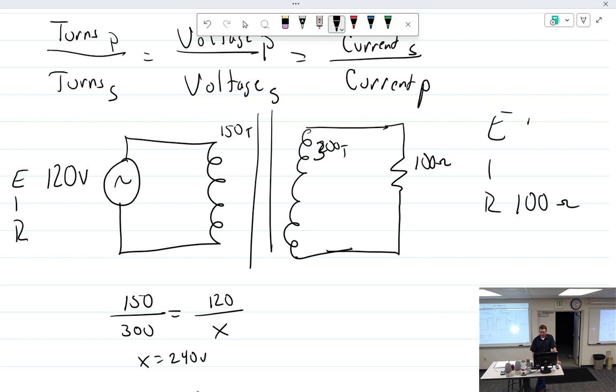So we can put 240 volts right there and then we could do the same thing. 120 over 240 equals secondary over primary. The current. Now we could figure out the current here. What's current here? 2.4 amps in the secondary.